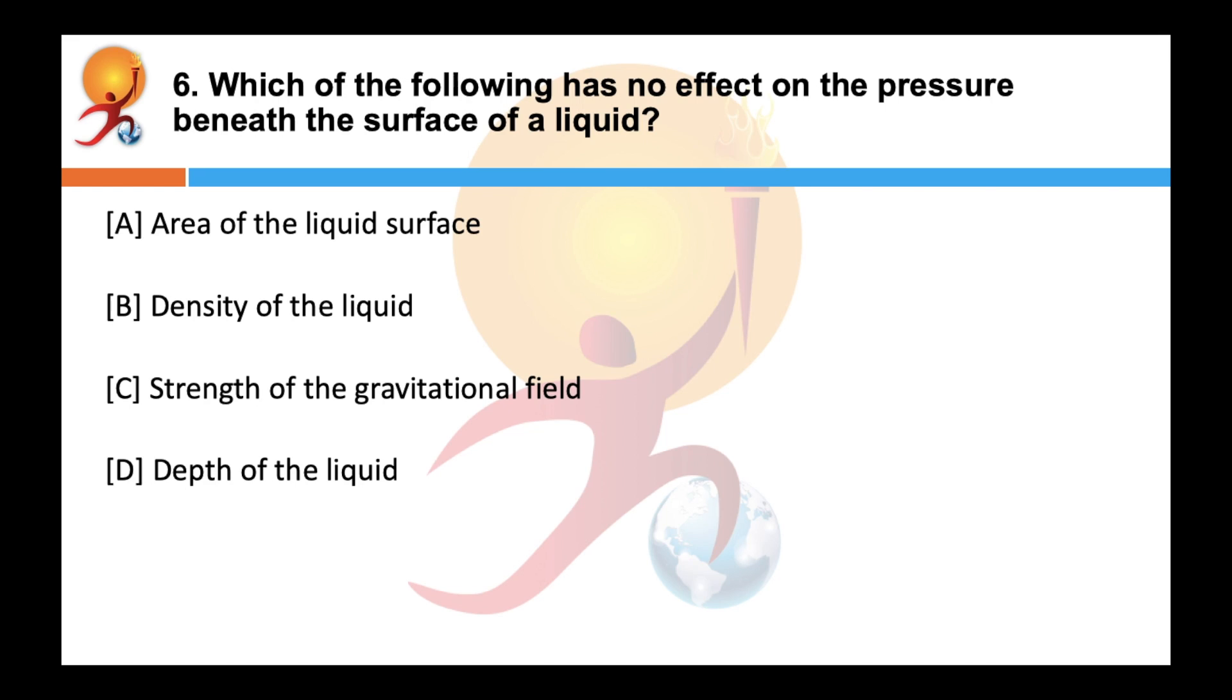Which of the following has no effect on the pressure beneath the surface of a liquid? Correct answer is A. Area of the liquid surface. It is clear from the above formula that water pressure only depends on density of water, gravitational acceleration and height of water column.